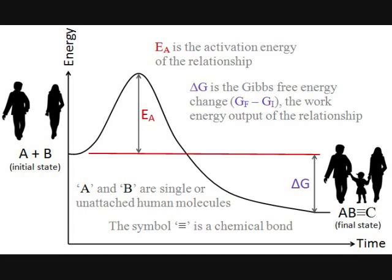The end of the reaction is what is called the final state, showing the same two people attached in a relationship with an attached child in the formation of a family. The final state is quantified thermodynamically by the time at which the differential of free energy is equal to zero, meaning that the value of free energy is neither increasing nor decreasing, and the relationship or reaction has stopped evolving — or in other words, is a dead relationship.